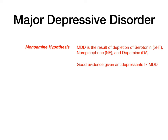Monoamines include serotonin or 5-HT, norepinephrine or NE, and dopamine or DA. The reason this hypothesis has such strong evidence is because when you give somebody a drug that increases any of these monoamines — such as SSRIs, SNRIs, TCAs, or MAOIs — all of those medications increase the monoamines. So if giving a drug that increases monoamines causes depressive symptoms to improve, the hypothesis is that depression is due to depletion of serotonin, norepinephrine, and dopamine.